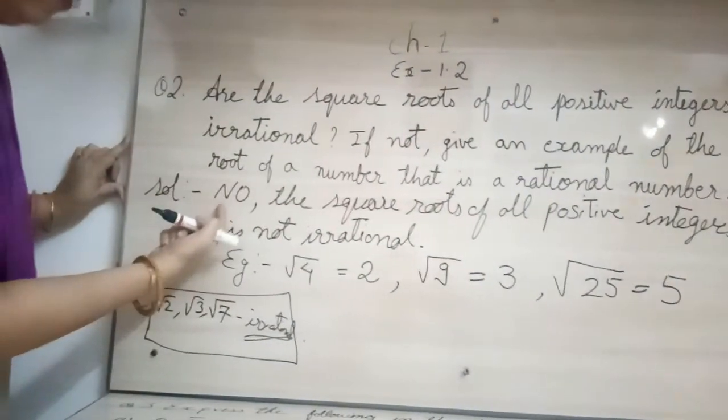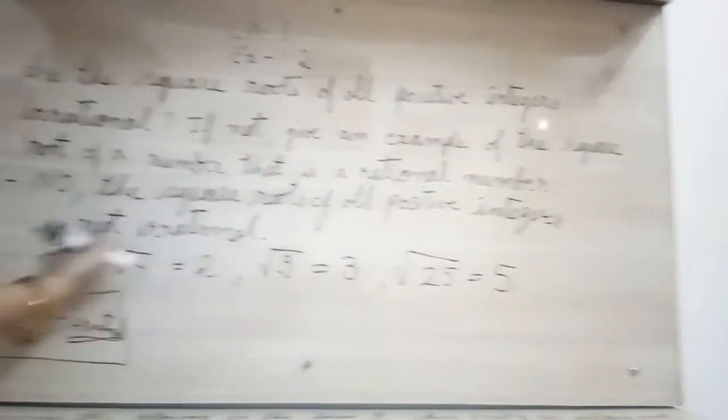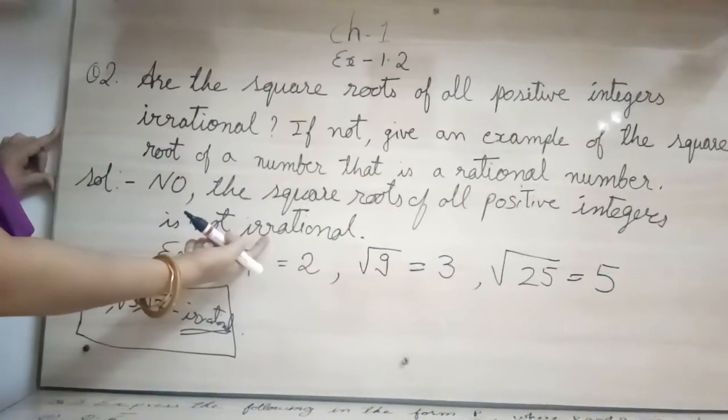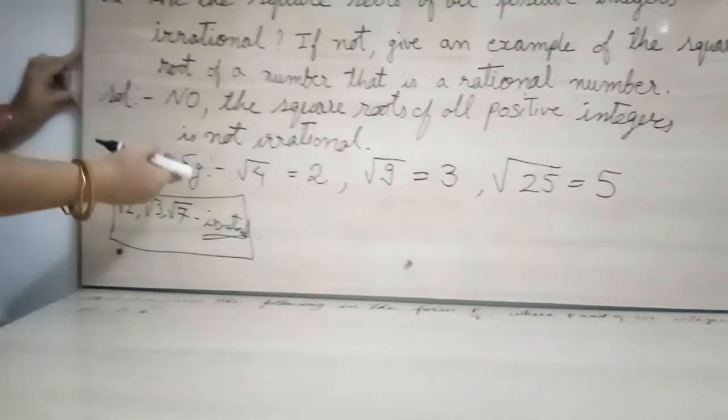So we say here, no, the square root of all positive integers is not irrational. Understood? Thank you.